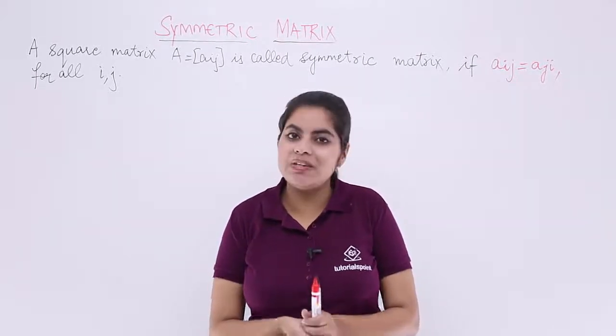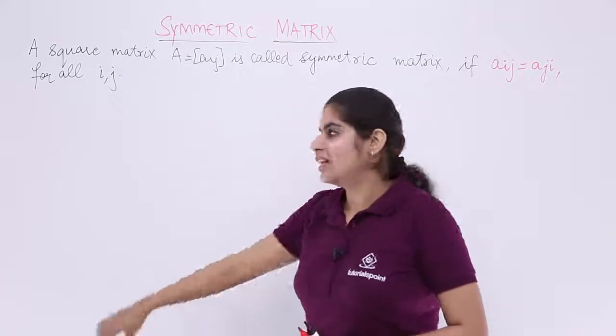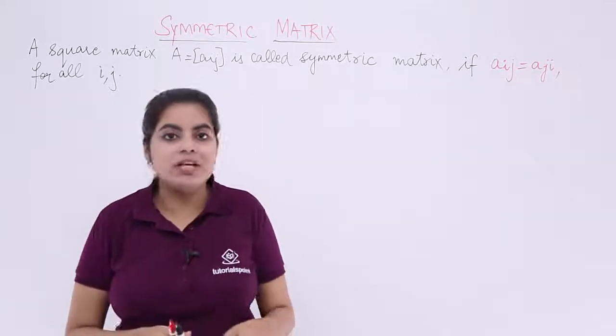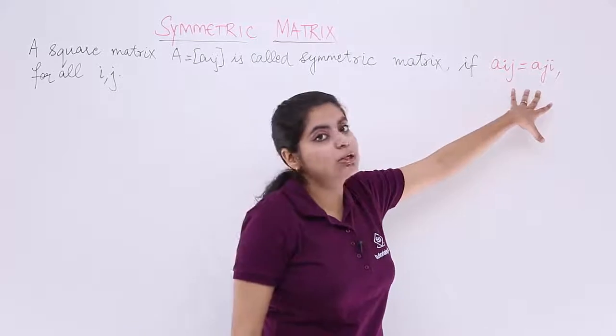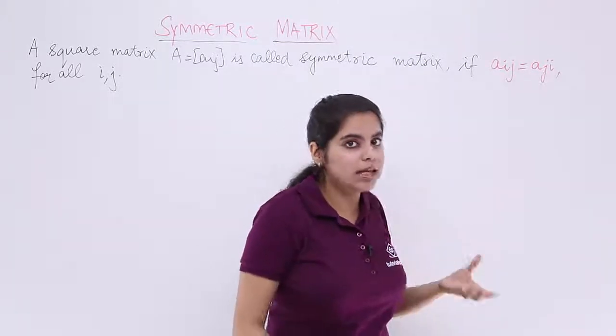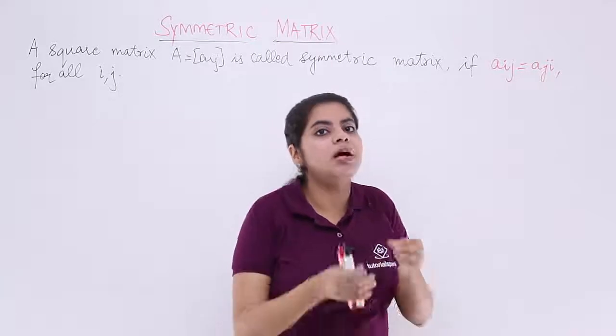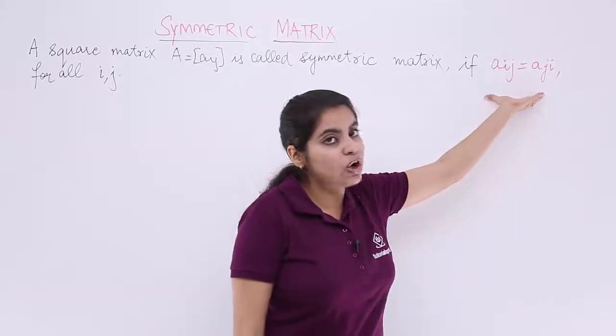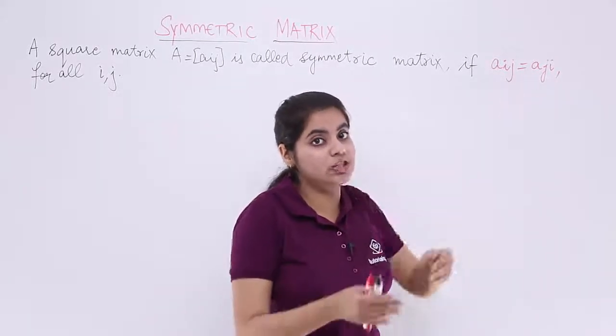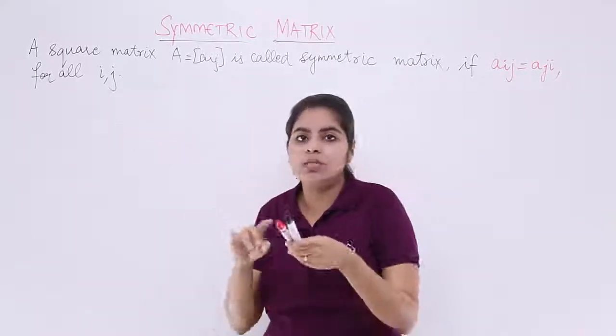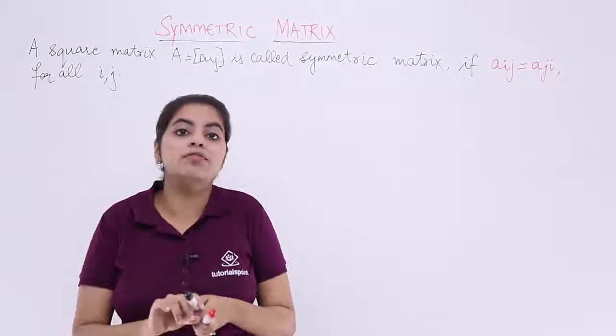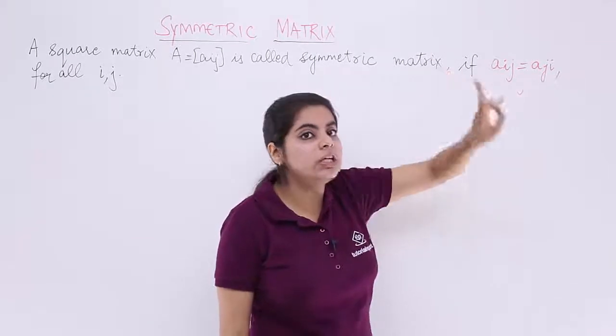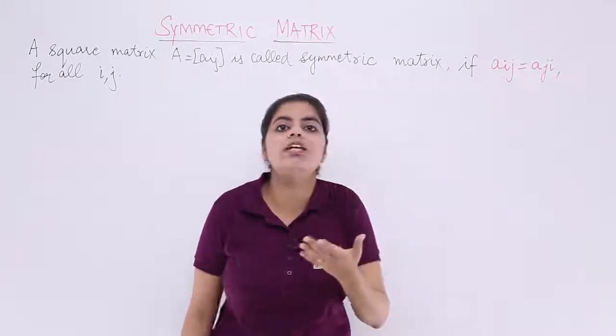Let's read what the definition is and see a numerical illustration. A square matrix A equals Aij is called a symmetric matrix when Aij equals Aji. A matrix is called symmetric if and only if this condition is followed, which means Aij equals Aji for all i,j. If i is 1, j is 1, or if i is 2, j is 1, all things yield me Aij values. When you interchange to Aji, the things should be same.